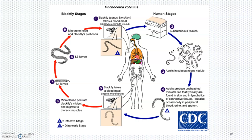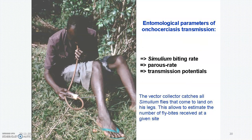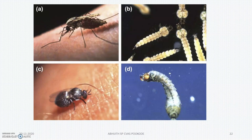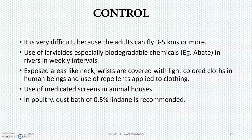This is a method used in endemic areas — the vector collector catches all Simulium flies that come to land on his legs; they come to bite and are caught by this machine. This shows the human stage and the black fly stage in the microfilaria cycle, along with the development stages. This illustrates river blindness transmission. Control is very difficult; we can use lindane and larvicides in areas where larvae are produced. Light colored clothes are recommended, along with use of repellents applied to the clothing.